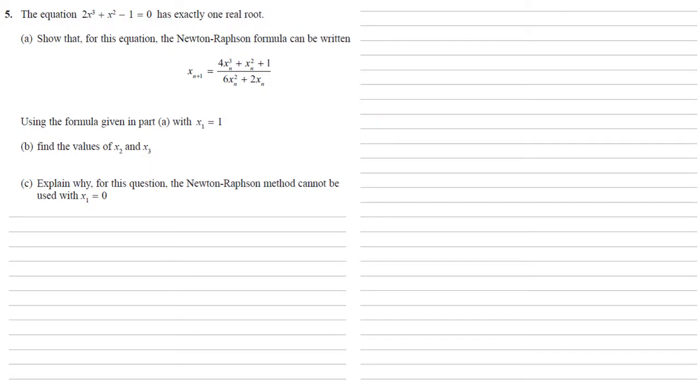We are told that the equation 2x cubed plus x squared minus 1 equals 0 has exactly one real root. We want to show that for this equation the Newton-Raphson formula can be written as x n plus 1 equals 4x n cubed plus x n squared plus 1 all over 6x n squared plus 2x n.